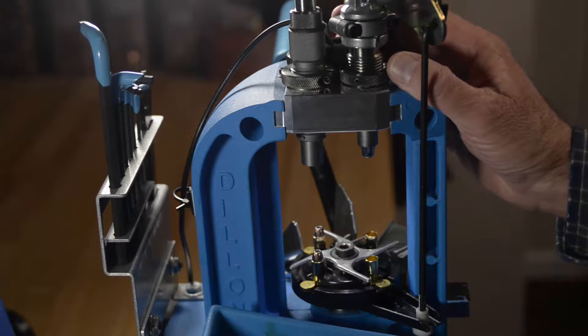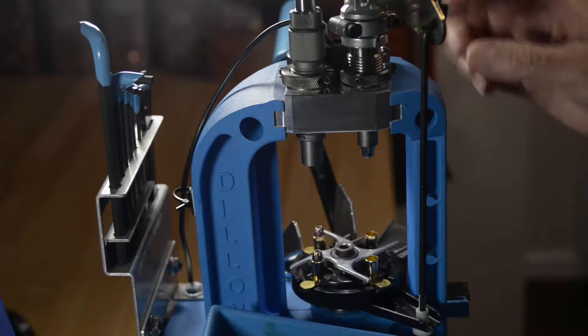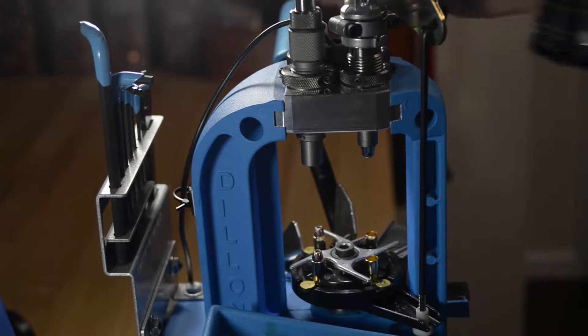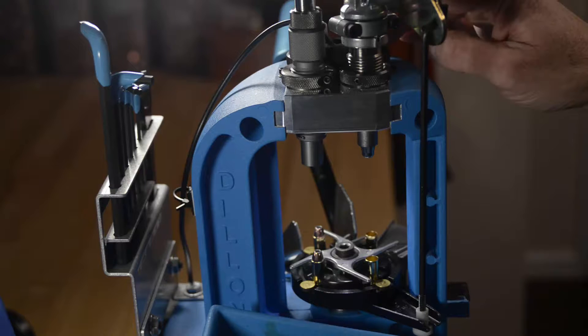So, how are calibers changed? First, remove the fail safe arm, and then in an alternating fashion, loosen each screw until they both can come out. And then remove the tool head and dies. Place them on the tool head stand.